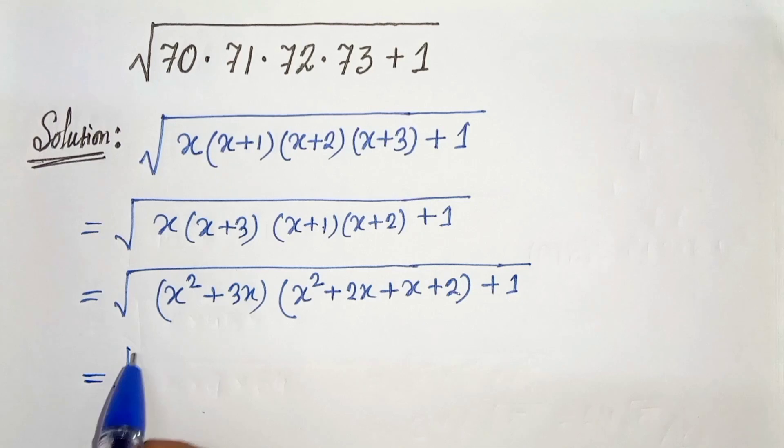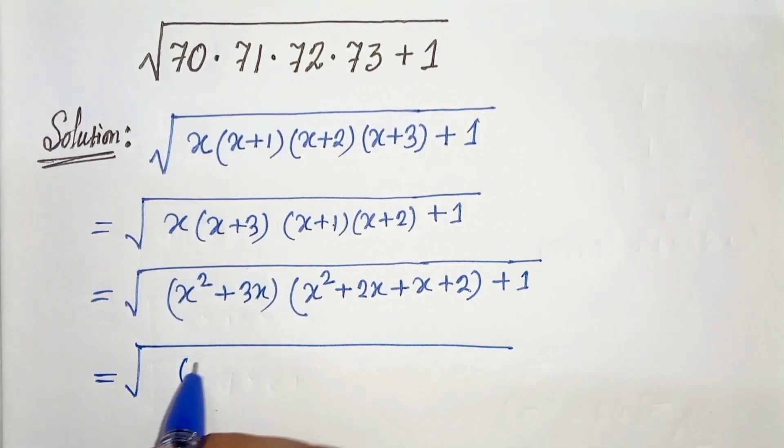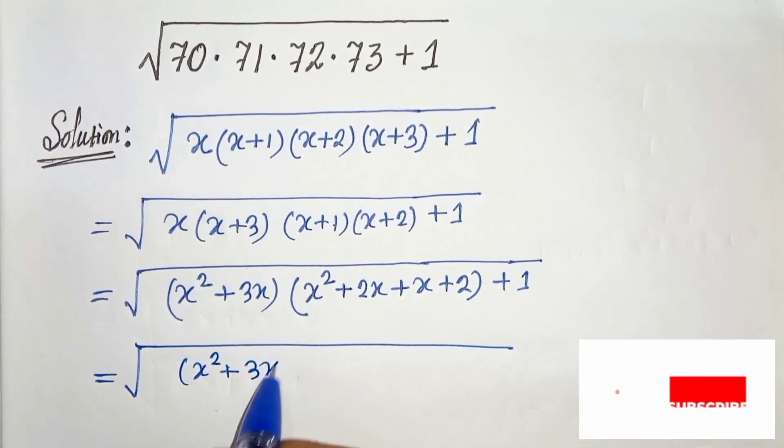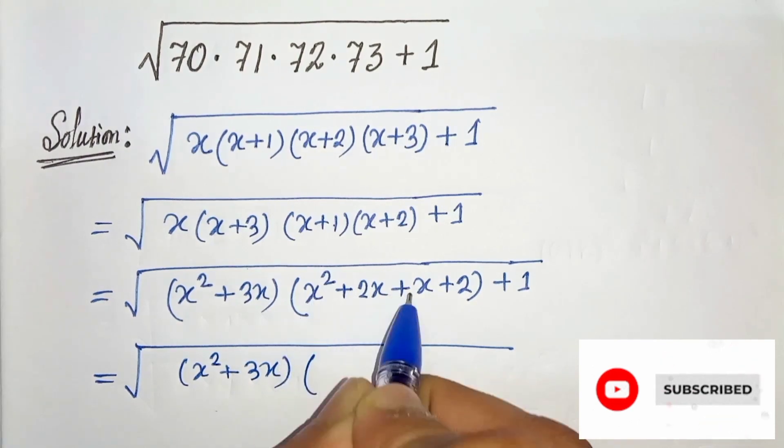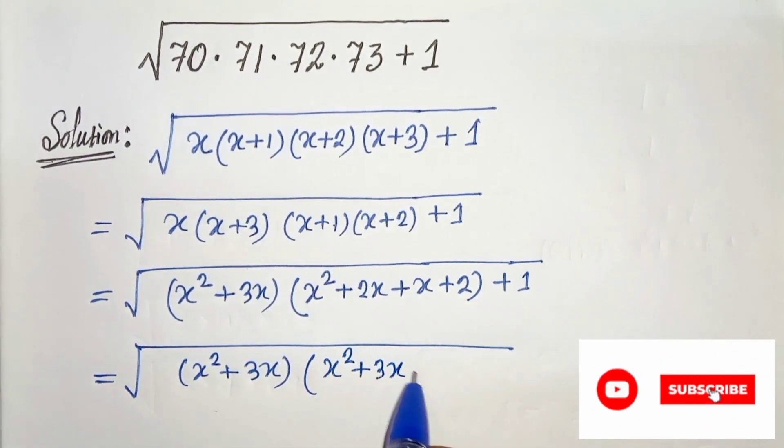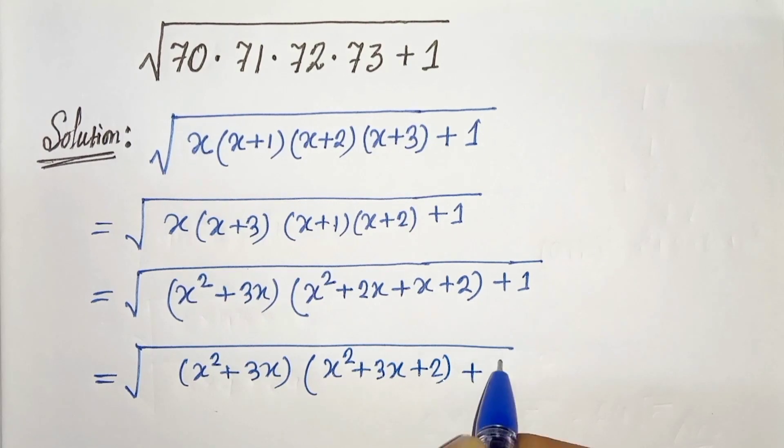In the next step, x squared plus 3x and here we will get x squared plus 2x plus x is 3x. x squared plus 3x plus 2 plus 1.